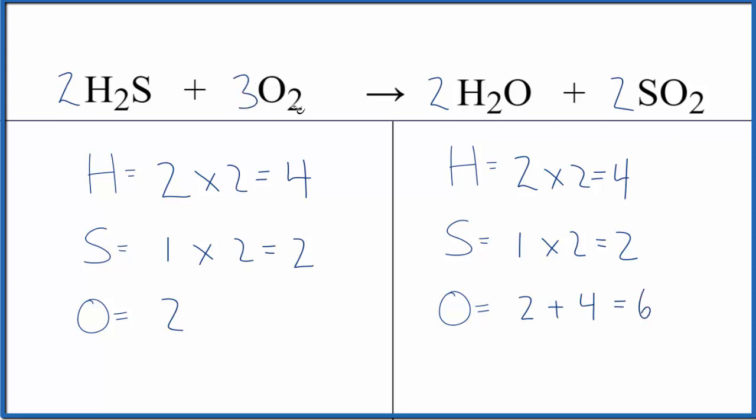Easy to fix, though. We put a three here. Two times three, that gives us six. We're done. This is balanced. And these are the same coefficients as before. This is the same ratio, two, three, two, two.